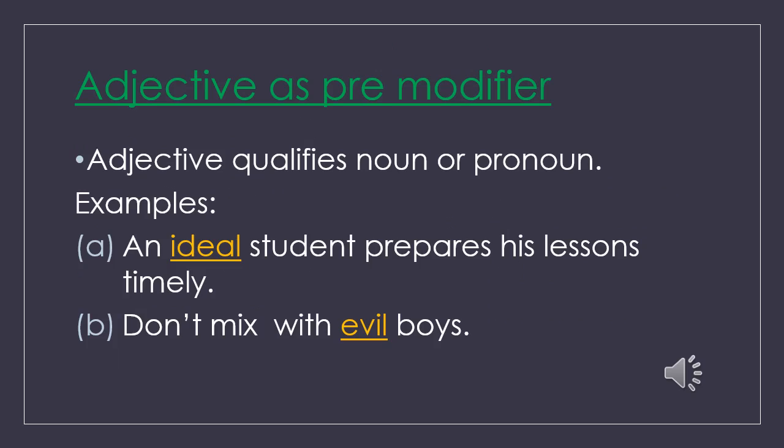Dear students, now we will learn adjective as premodifier. We know adjective qualifies a noun or pronoun. For example: 'An ideal student prepares his lessons timely.' Example two: 'Don't mix with evil boys.' Here, 'ideal' and 'evil' are adjectives which are qualifying the nouns 'student' and 'boys.' In the examination paper, the demand will be to use adjective as premodifier and fill in the blank space.